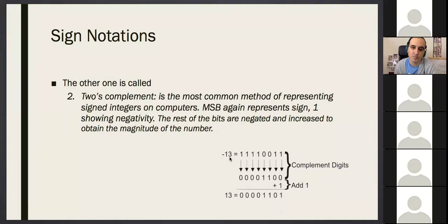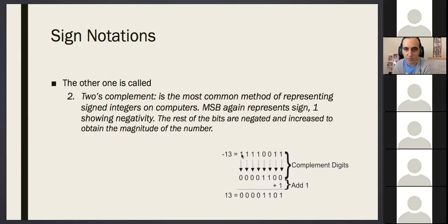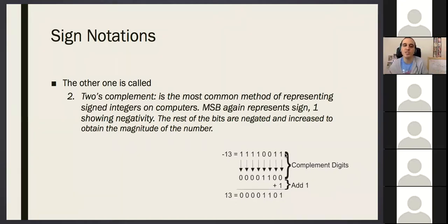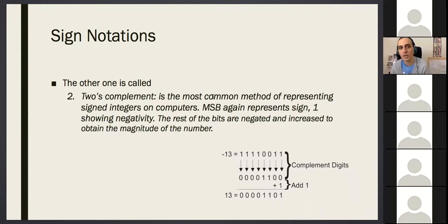Any questions? A student asks: how will I know that this is a negative number or which notation is used? Somebody will always tell — it is designated beforehand. There is no way to understand just from the bit pattern, because the same pattern could be a large positive unsigned number or a negative two's complement number. In the system you design, you'll assume the notation and do your operations accordingly.